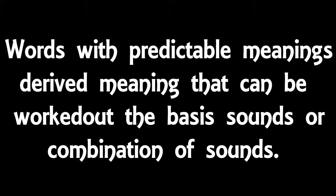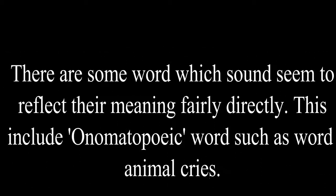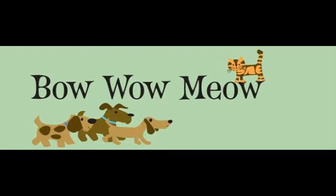Words with predictable meanings — that is, meaning that can be worked out on the basis of the sounds or combination of sounds. There are some words whose sounds seem to reflect their meaning fairly directly. This includes so-called onomatopoeic words, such as words for animal cries. There are also sets of words in which some similarities in sound, say in the cluster of consonants at the beginning, seems to reflect a vague similarity in meaning.